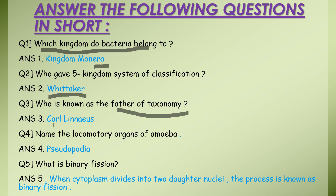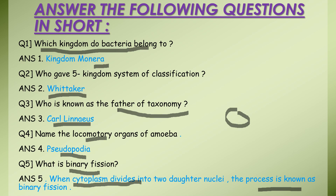Next: name the locomotory organs of amoeba. Amoeba's locomotory organs are pseudopodia. Next, what is binary fission? Binary fission is when the cytoplasm divides into two daughter nuclei. The cytoplasm splits into two parts, forming two daughter nuclei - this is binary fission.